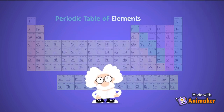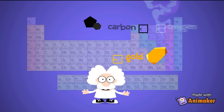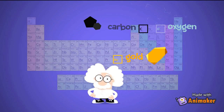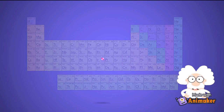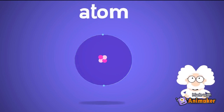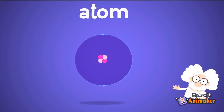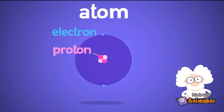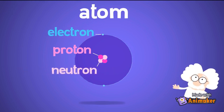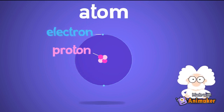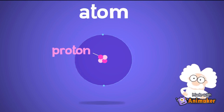If we observe elements like gold, carbon, and oxygen, we can see that they have very different properties that don't look or act the same. But why are they so different? Well, it comes down to what's inside their atoms. Atoms are made of just three types of tiny particles called protons, electrons, and neutrons, and each of these tiny particles does something special.